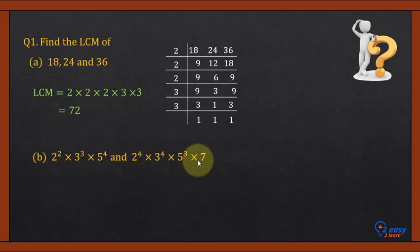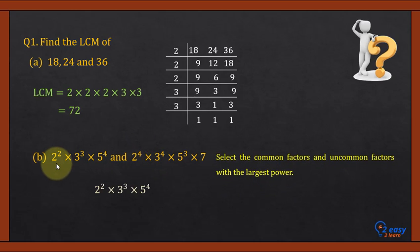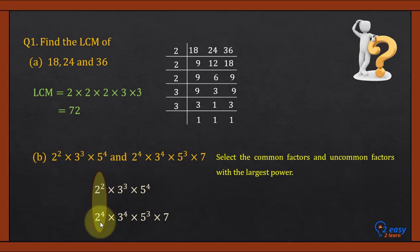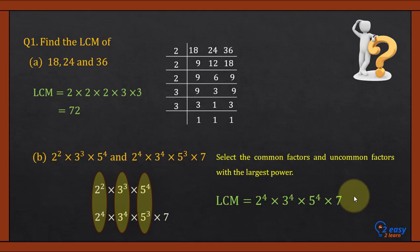For the second question, we use the index notation prime factorization method. The rule is: select the common factor with the highest power. Writing in two rows — 2 is common, highest power is 4; 3 is common, highest power is 4; 5 is common, highest power is 4; and 7 is uncommon. So the LCM is 2⁴ × 3⁴ × 5⁴ × 7.